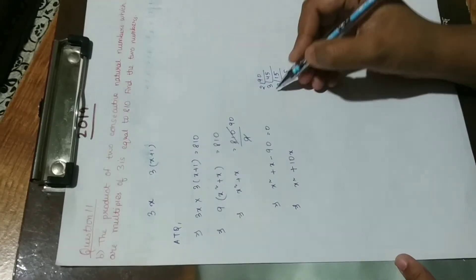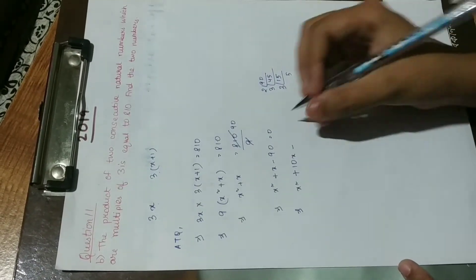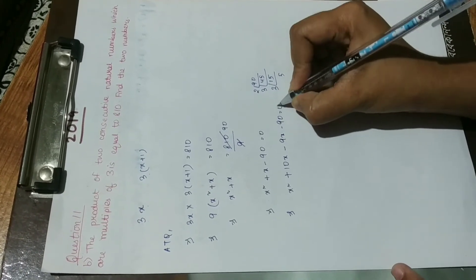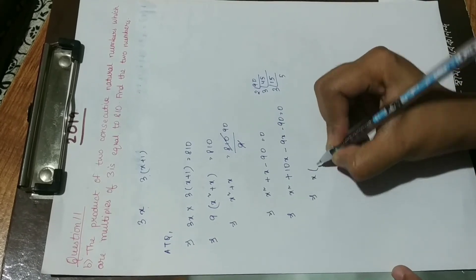So 2 times 5 is 10 and 3 times 3 is 9. So we are getting x if you are subtracting 10x minus 9x. So taking x common from here.